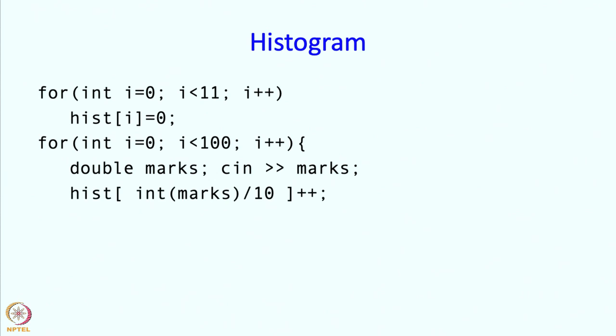We should divide the marks by 10, but notice that our marks are double. Our marks could be 47.5. So if I write int(marks), then I get the integer part, and then I get the integer division. By doing the integer division, I get to know which element of hist I have to increment, and I just go ahead and increment that element. That is all there is to it.